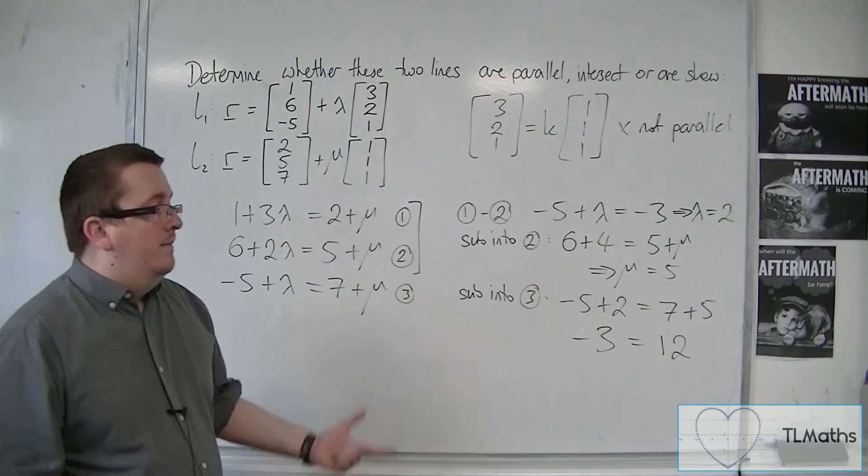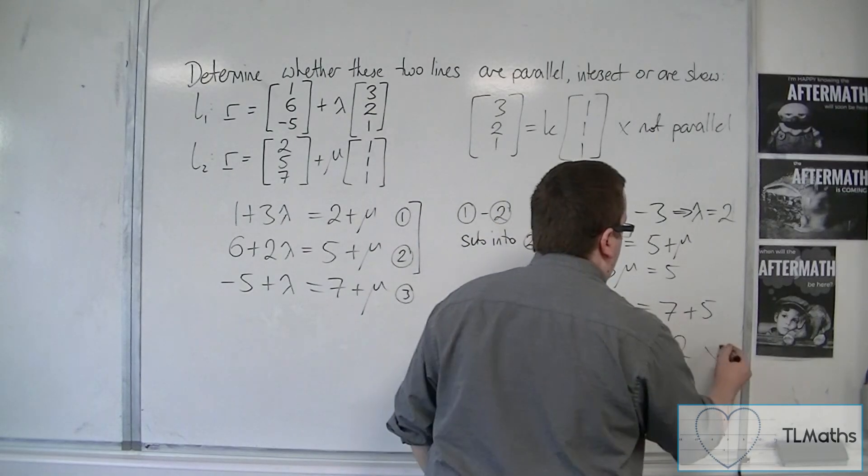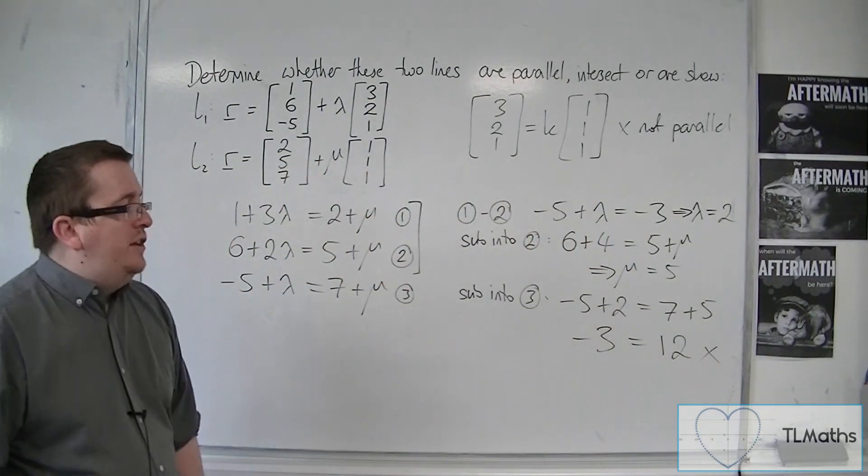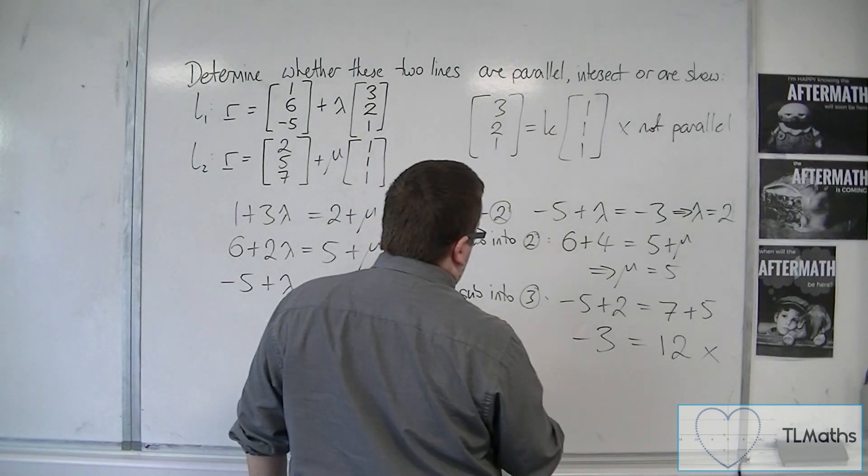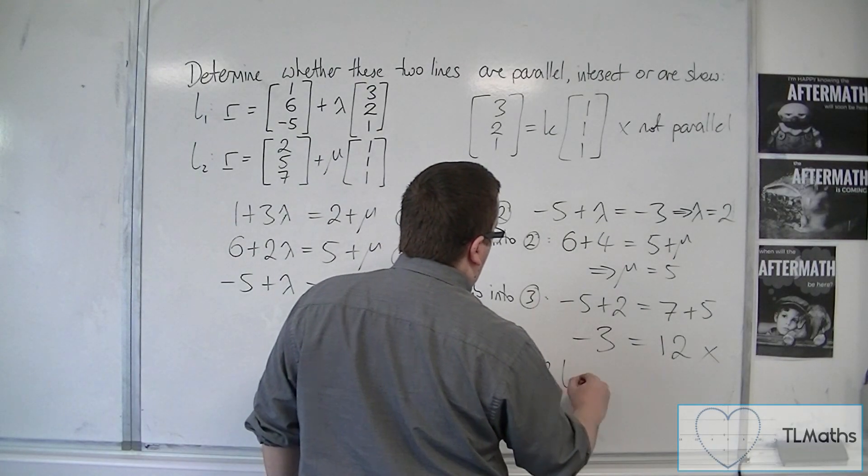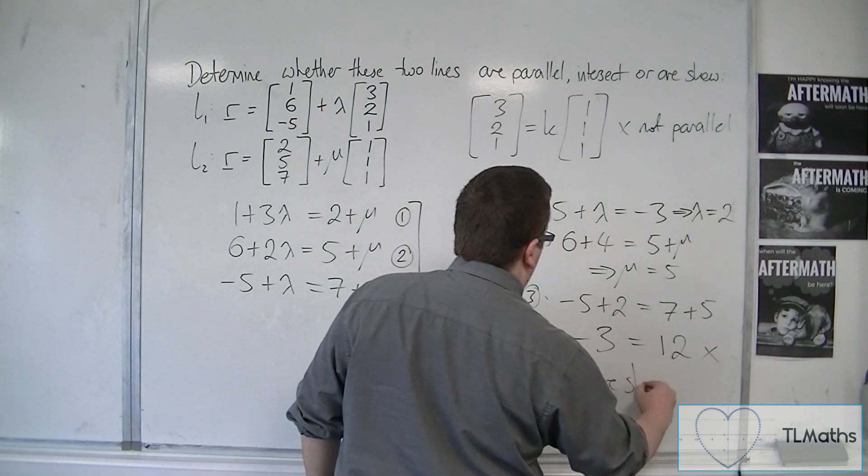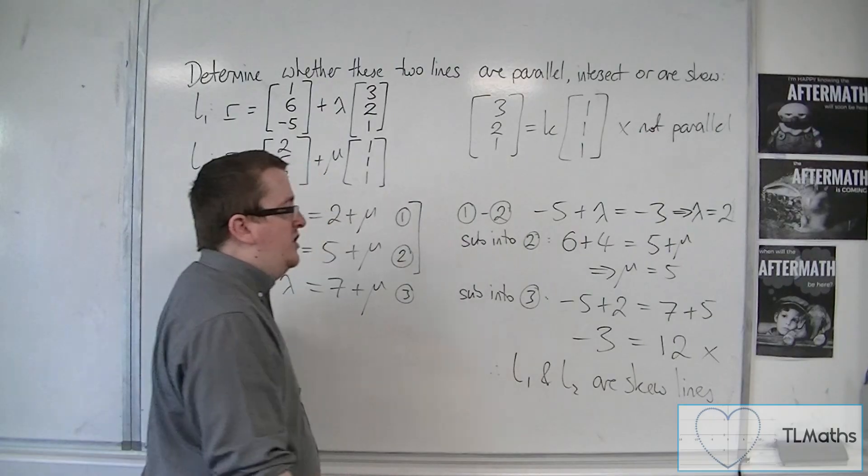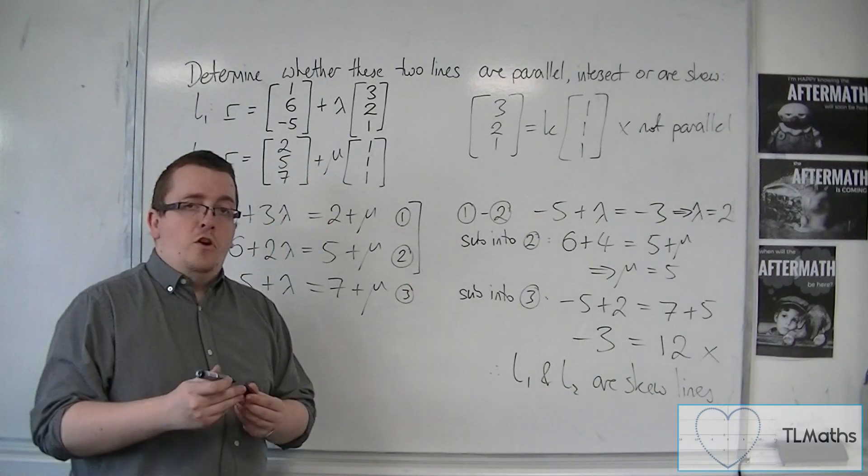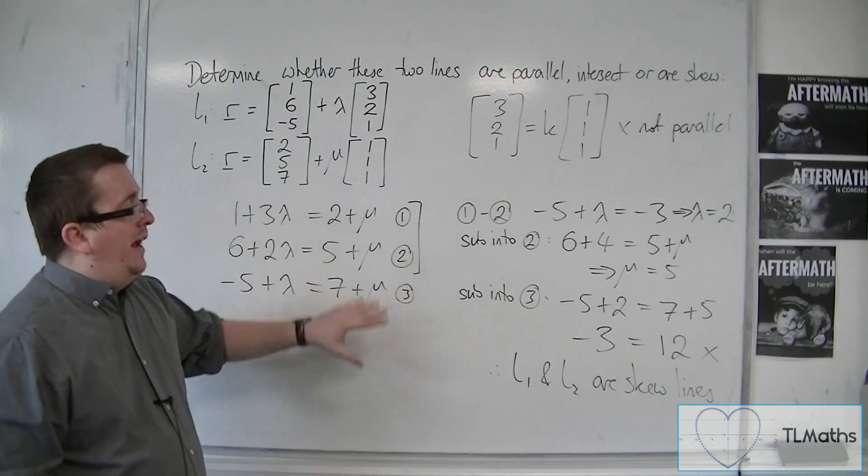And clearly, that's not right. Because the values that we get here are not the same, these two lines must be skew lines. They do not intersect, and they are not parallel. And that's how you can show it.